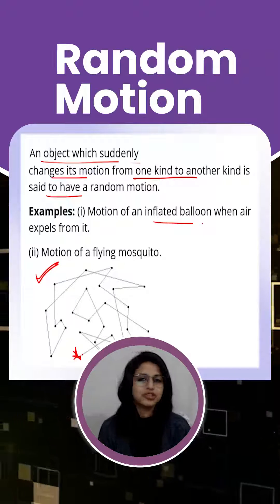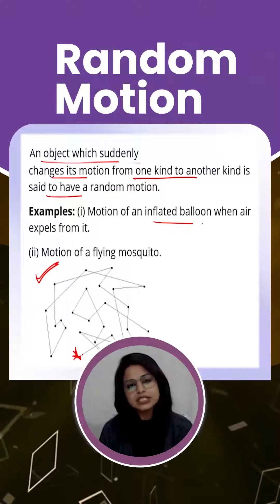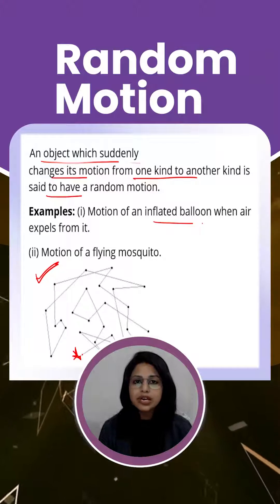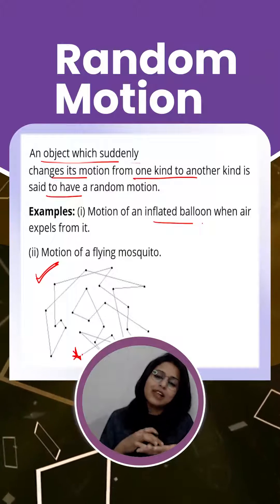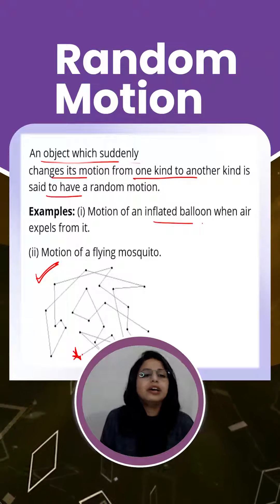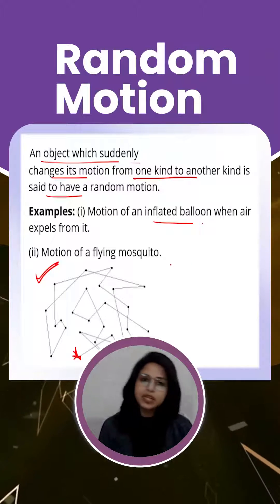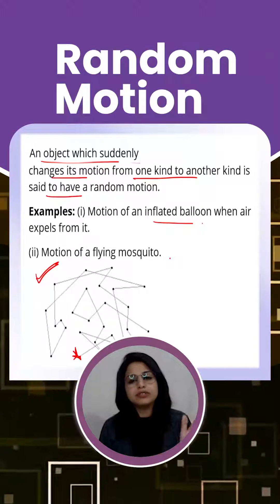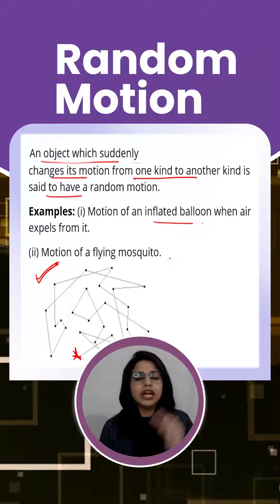You cannot judge its motion - whether it is translatory only or rotatory. Sometimes it goes around itself; that is how a mosquito flies. So random motion is when your motion is changing from one kind to another very rapidly and randomly.